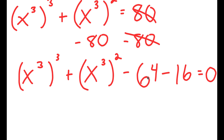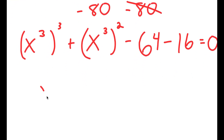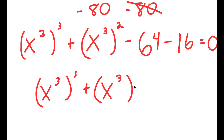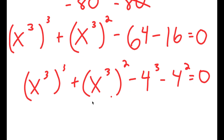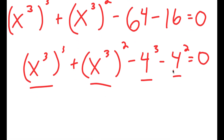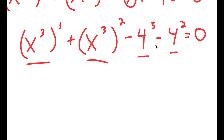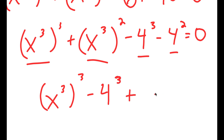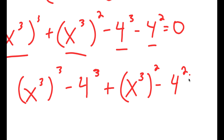The reason I wrote 80 as 64 minus 16 is because 64 is the same thing as 4 to the power of 3, and 16 is the same thing as 4 to the power of 2. So I have something to the power of 3 and that same thing to the power of 2, and then 4 to the power of 3 and 4 to the power of 2 — I need to match these two. I'm going to reorganize so that the powers of 3 are next to each other and the powers of 2 are next to each other: x to the power of 3 to the power of 3 minus 4 to the power of 3, plus x to the power of 3 to the power of 2 minus 4 to the power of 2, is equal to 0.